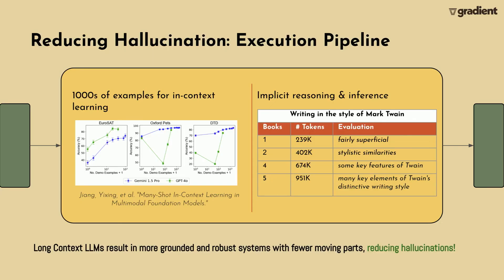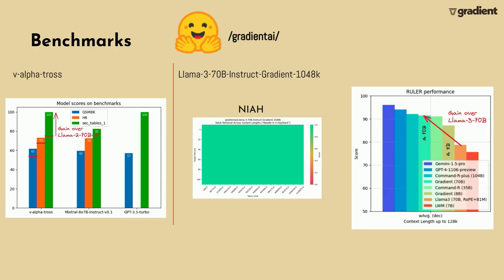The punchline is that long context language models give you more grounded and robust systems. There are fewer moving parts, much more is contained in the language model itself, and that in turn reduces hallucinations.